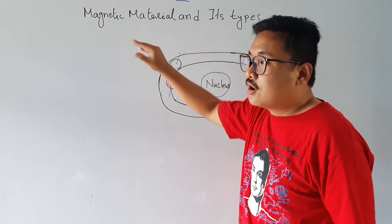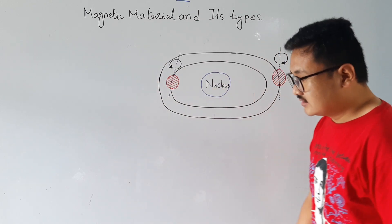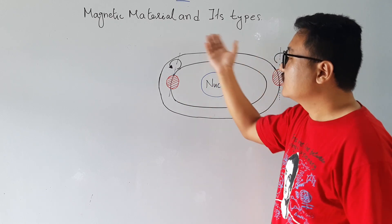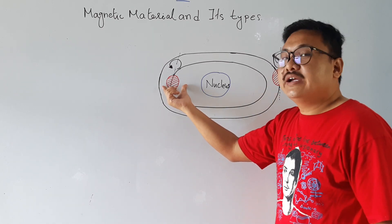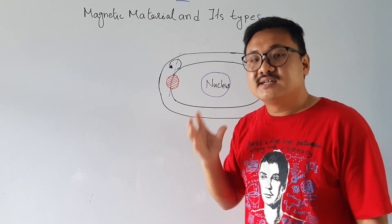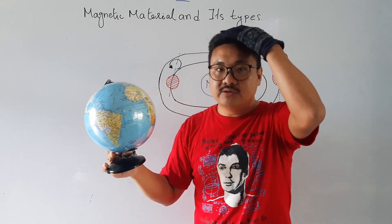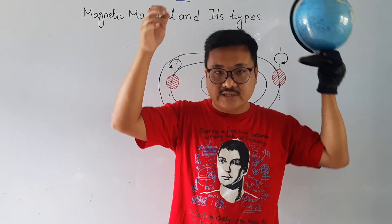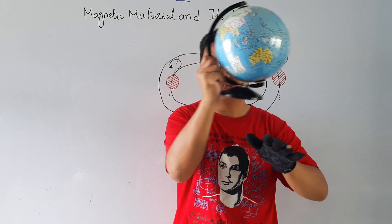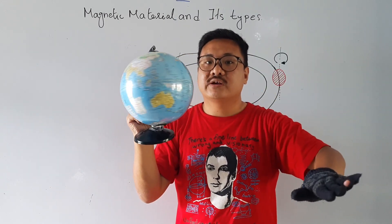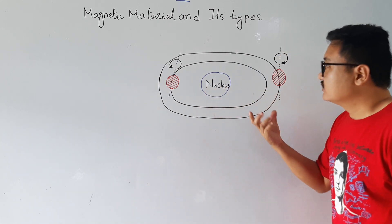Let us look at how magnetism originates in magnetic material like iron. We know that in iron there are many atoms, and in an atom there are many electrons moving around the nucleus. The electron itself also rotates or spins on its own axis — just like Earth. So the electron both moves around the nucleus and spins.